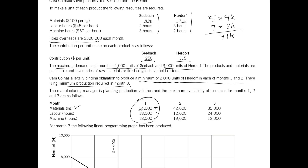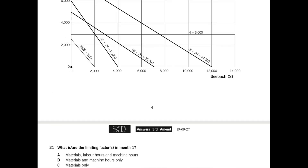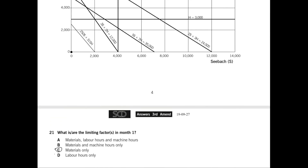For labor: 2 hours × 4,000 units of Seaback = 8,000 hours; 3 hours × 3,000 units of Herdorf = 9,000 hours. Total needed = 17,000, and we have 18,000 available — so labor is NOT a limiting factor. For machine hours: 3 hours × 4,000 = 12,000; 2 hours × 3,000 = 6,000. Total = 18,000, and we have 18,000 — so machine hours is NOT a limiting factor either. The answer is option C: only materials are the limiting factor in month one.